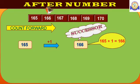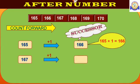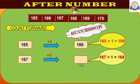Take one more number. That is 167. What comes after 167? Yes, 167 plus 1 equal to 168. So, after 167, we get 168. Or, you can say, successor of 167 is 168.